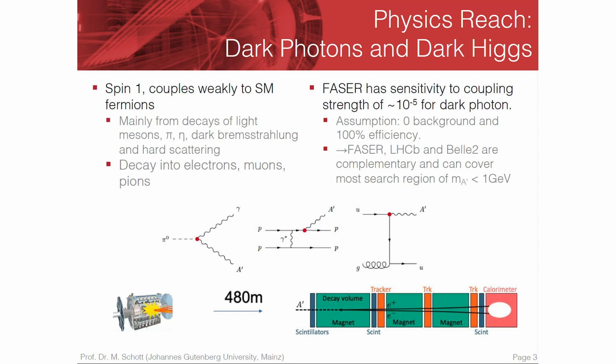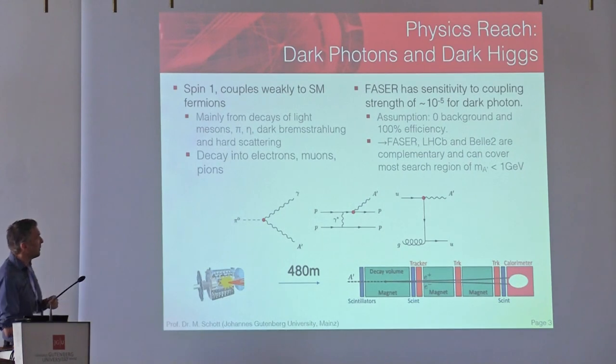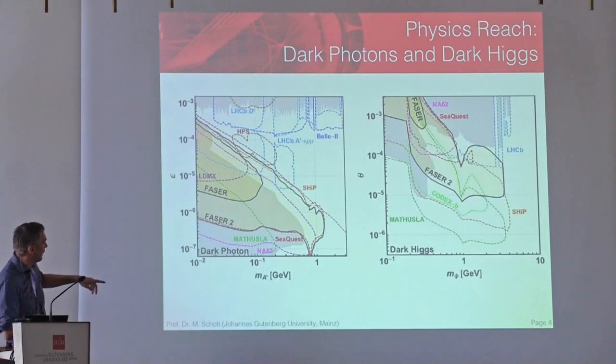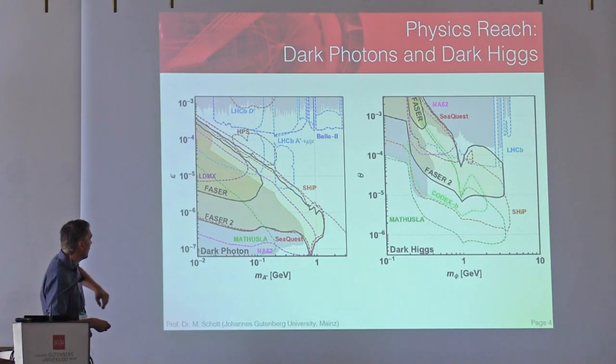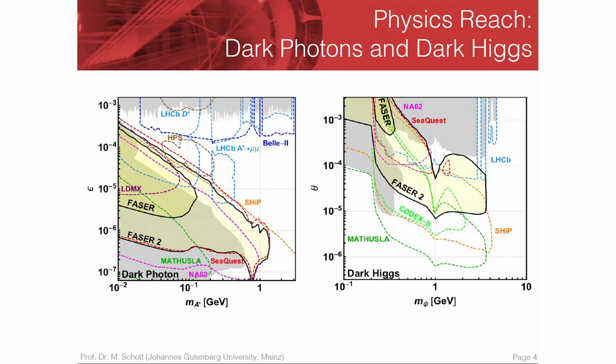That's essentially the full idea. One background to mention is muons, which could also come here, but muons we can detect by these scintillators. The FASER reach is shown here for two models. It's actually rather complementary to other experiments out there. You also see SHIP and FASER 2, which might be the successor of the FASER experiment.